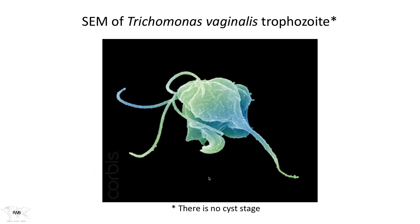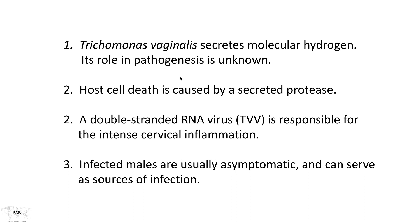This scanning electron micrograph of Trichomonas vaginalis shows its morphology — a rather loose morphology. The organism changes its shape under the microscope; it isn't rigid like many other organisms. You could miss it if it weren't moving. For instance, in a vaginal smear or pap smear that's been stained, trained technicians can recognize these organisms, and that's usually how they're diagnosed. As mentioned, the parasite secretes molecular hydrogen.